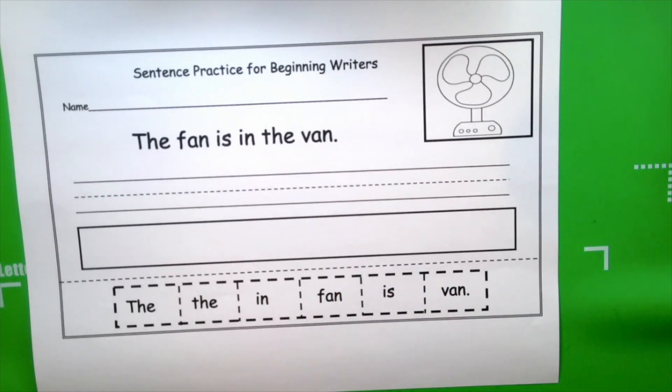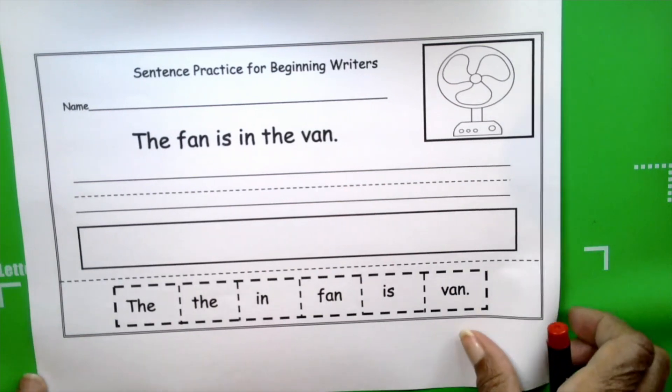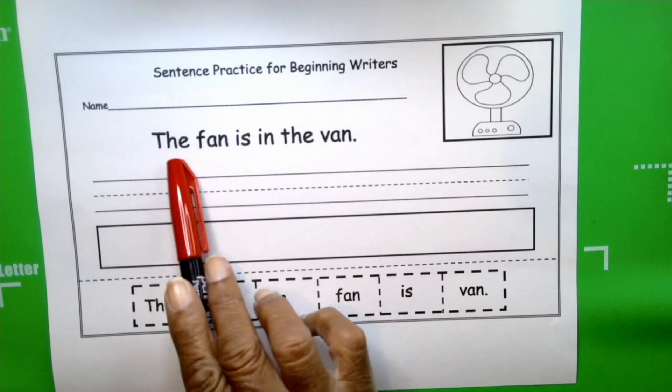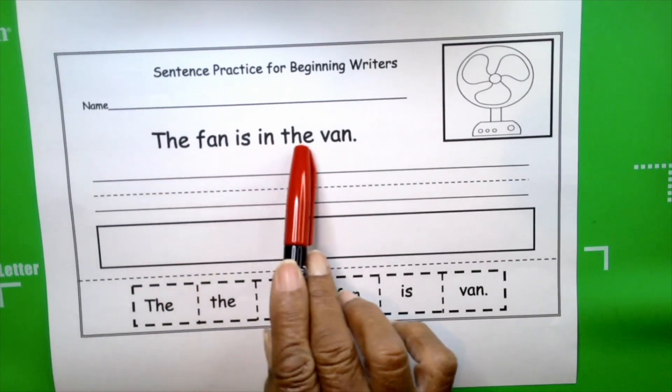We're learning about our sight words and the best way to learn sight words is in context, to read them, to write them, to interact with them. The fan is in the van. Your turn.